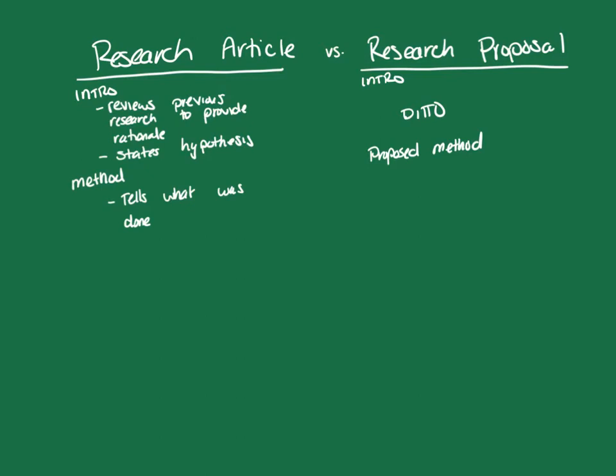The research proposal is where you're stating your plan of what you will do in order to test the hypothesis. Research articles tell the public and the research community what we know, but research proposals are used to say what we want to know and our plan for finding that information. Research proposals are often written before articles because this is the researcher's plan, and they are submitted to IRBs or funding agencies to get approval for ethically collecting data and to get funds. The purpose of the research proposal is to plan for what will eventually become a research article.